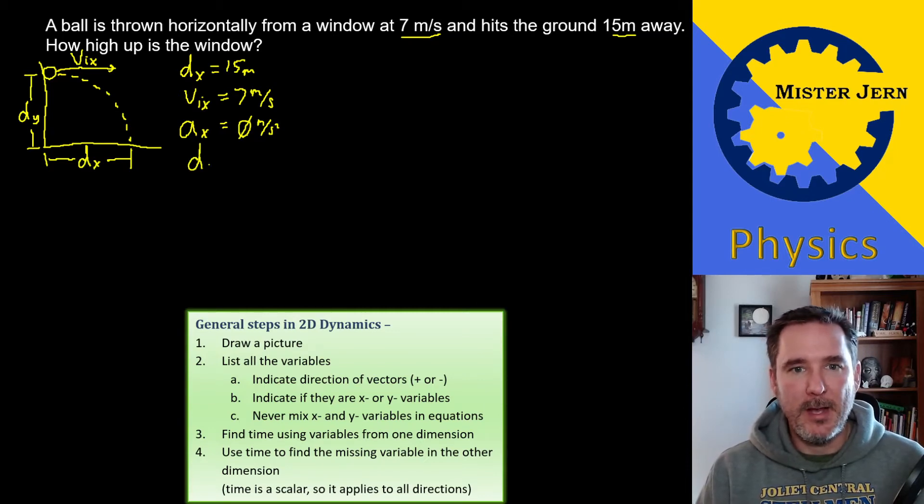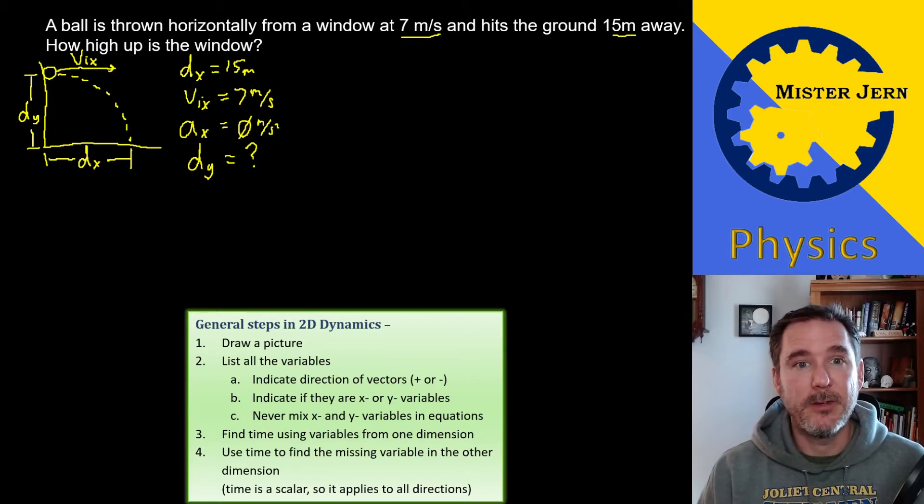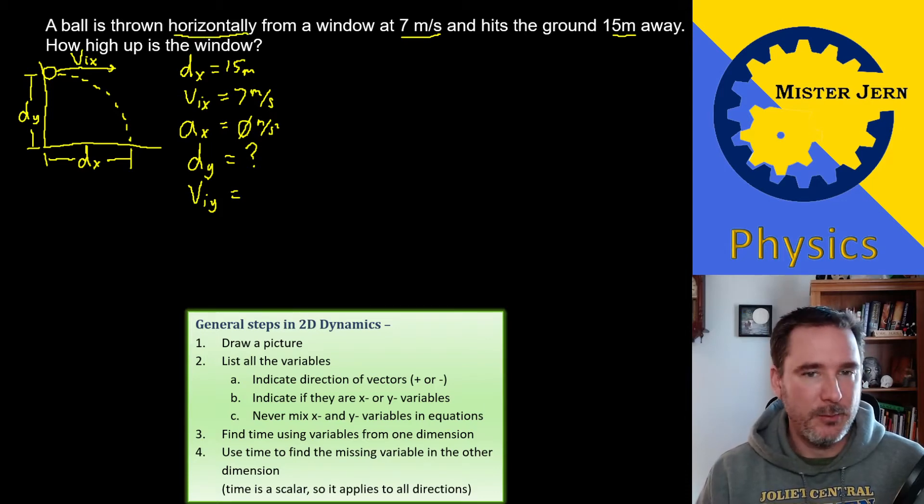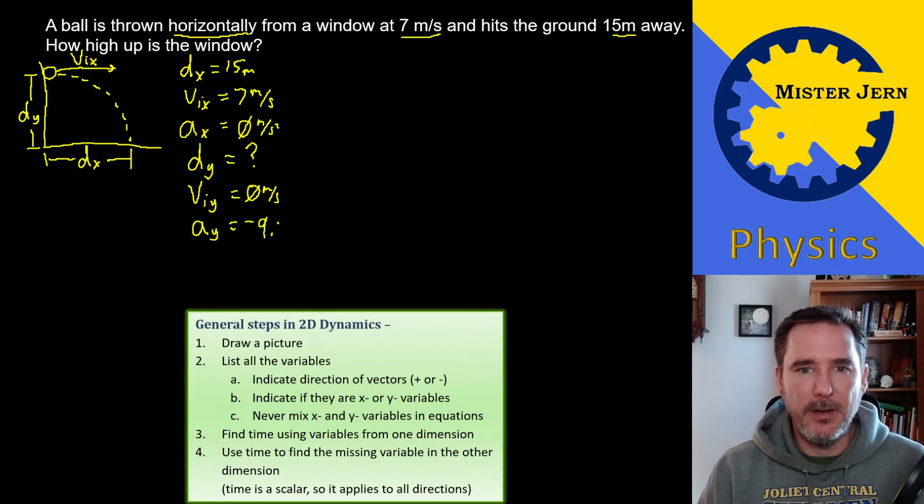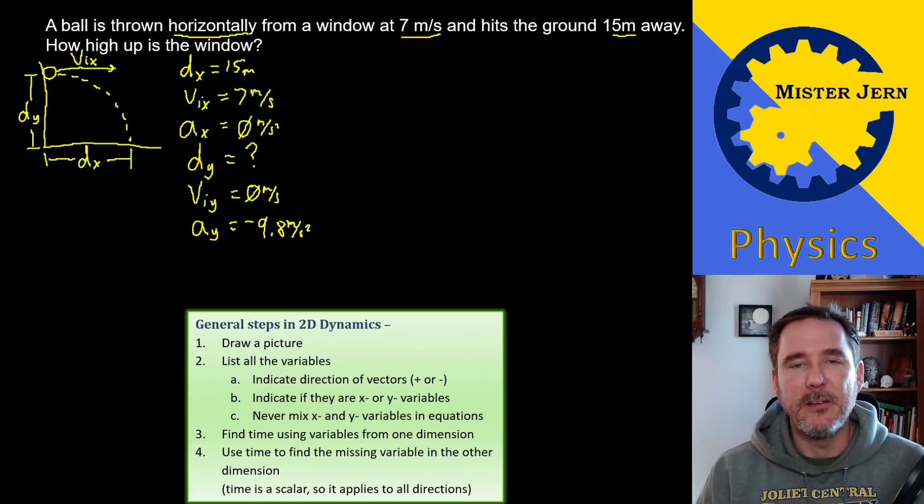Then I move on to the y's. What's displacement in the y direction? We don't know. That's what we're trying to find out. How high up is the window? What is the initial velocity in the y direction? Well, this is the whole idea of a horizontally launched projectile. It is 0 meters per second in the y direction. It's not thrown up, it's not thrown downward, it's thrown horizontally. What is the acceleration in the y direction? It's negative 9.8 meters per second squared.